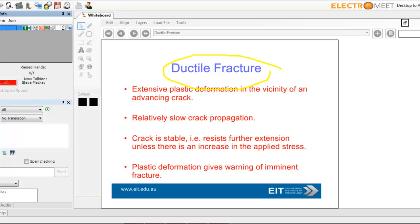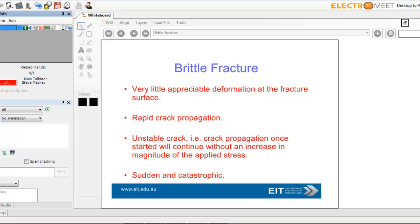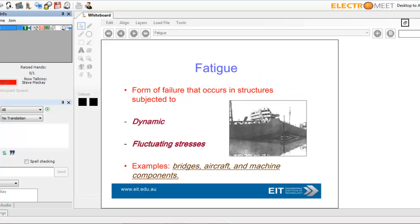Ductile fracture is extensive plastic deformation in the vicinity of an advancing crack. Relatively slow crack propagation. Crack is stable. Brittle fracture - there's very little deformation of the fracture surface. Crack goes rapidly across, sudden and catastrophic. Obviously, metal would not be brittle necessarily.